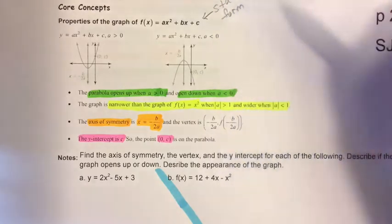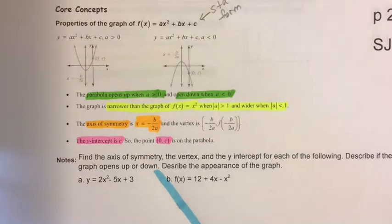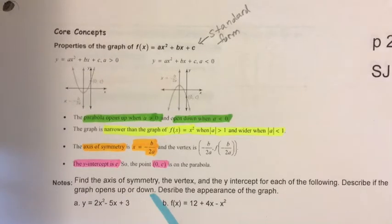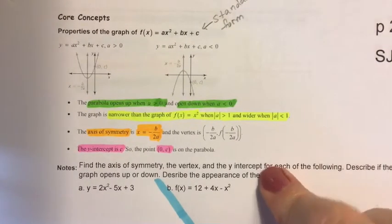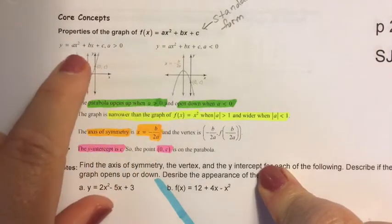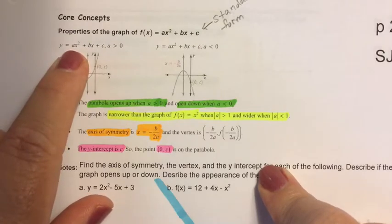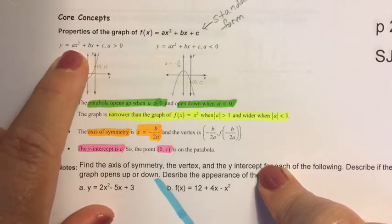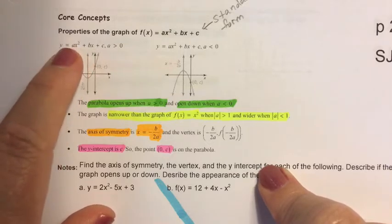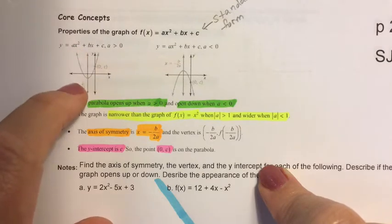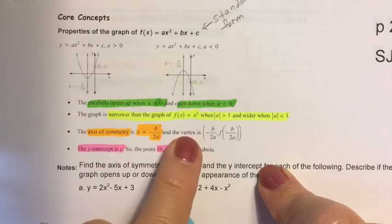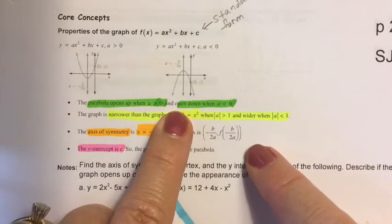First, I want to point out that this is standard form. It's very important that you know the difference between vertex form, standard form, and intercept form. If your a-value is positive, then the direction of your parabola is pointing up. If your a-value is negative, then you have a reflection across the x-axis and the direction is pointing down.